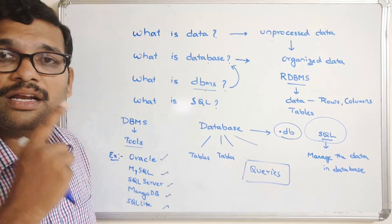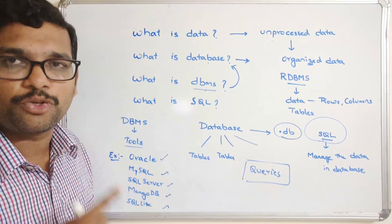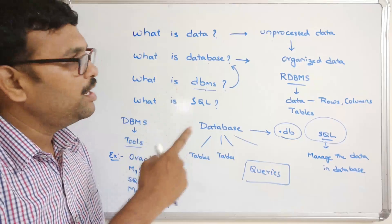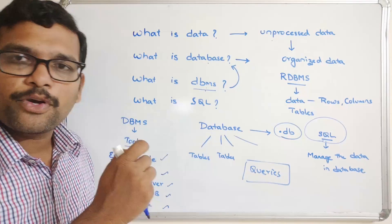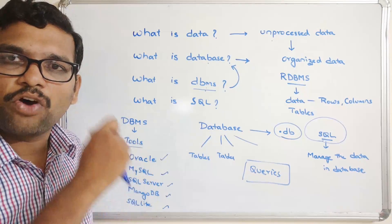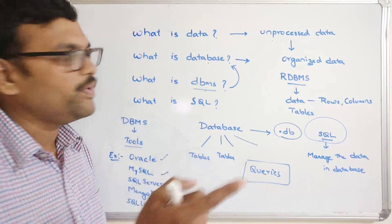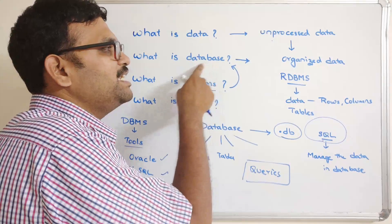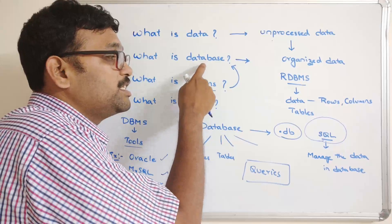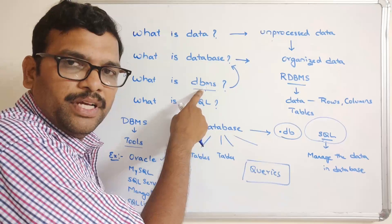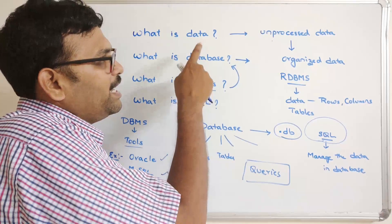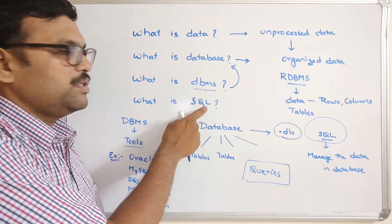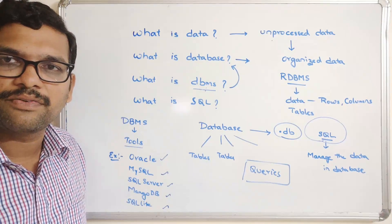So this is the major difference between data, database, DBMS, and SQL. Data is unprocessed information. When unprocessed data is organized in a structured manner, that is called a database. Managing the database is done with a tool called DBMS, and the data is accessed from the database using SQL — Structured Query Language.